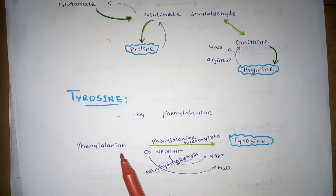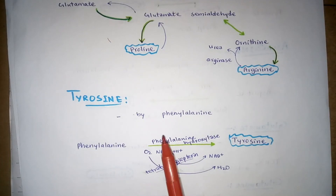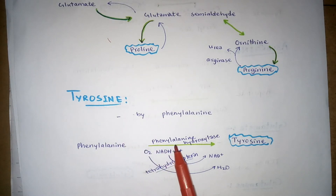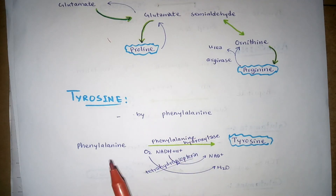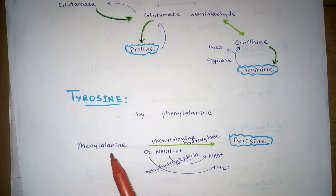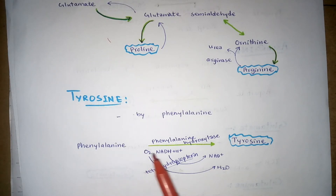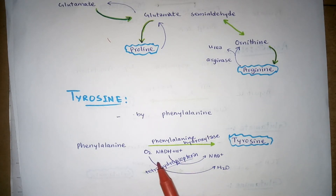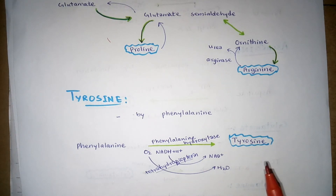The last amino acid synthesized is tyrosine, which is synthesized by the hydroxylation of the essential amino acid phenylalanine. The phenylalanine hydroxylase enzyme catalyzes this reaction. Tetrahydrobiopterin is also required in this reaction. This is the formation of tyrosine from phenylalanine.